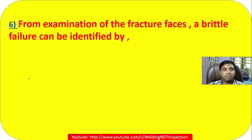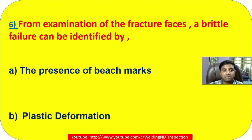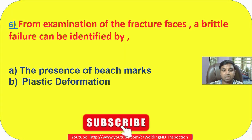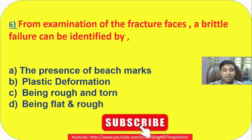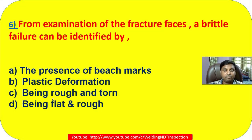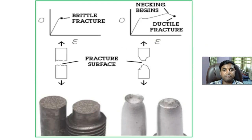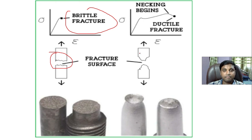Question 6: From examination of a fracture test, brittle failure can be identified by the presence of what? Options: A) benchmark, B) plastic deformation, C) being rough and drawn, or D) being flat and rough. Rough and drawn is characteristic of ductile failure. Looking at the fracture surface, brittle failure appears flat and rough, while ductile failure appears rough and drawn. So the answer is D.